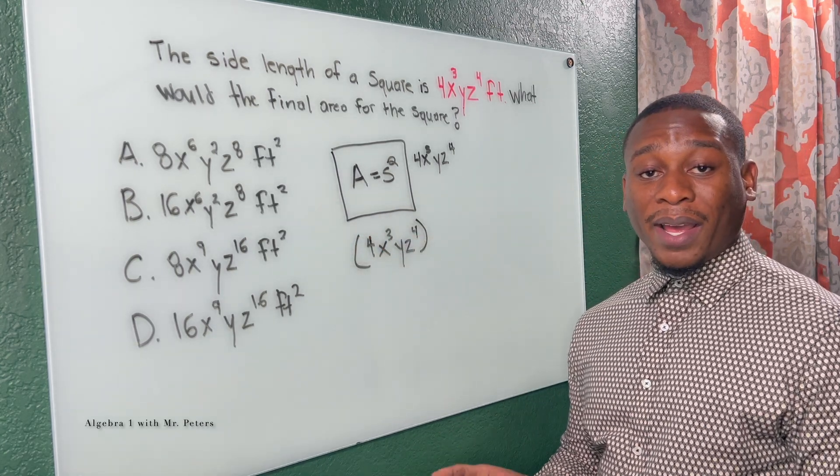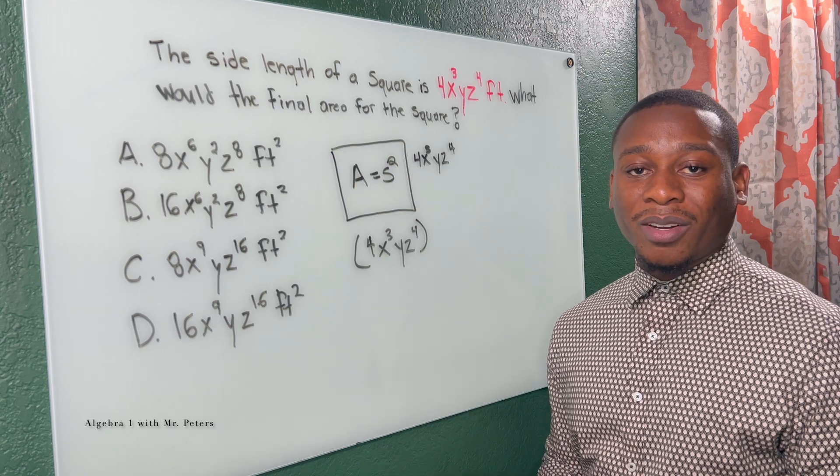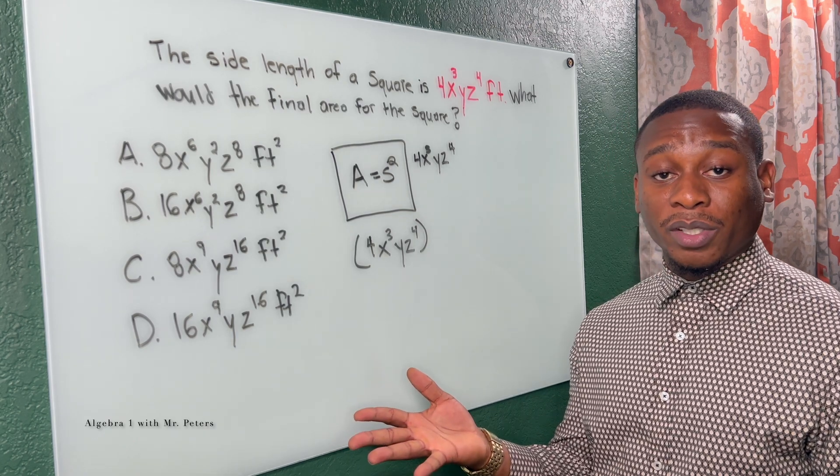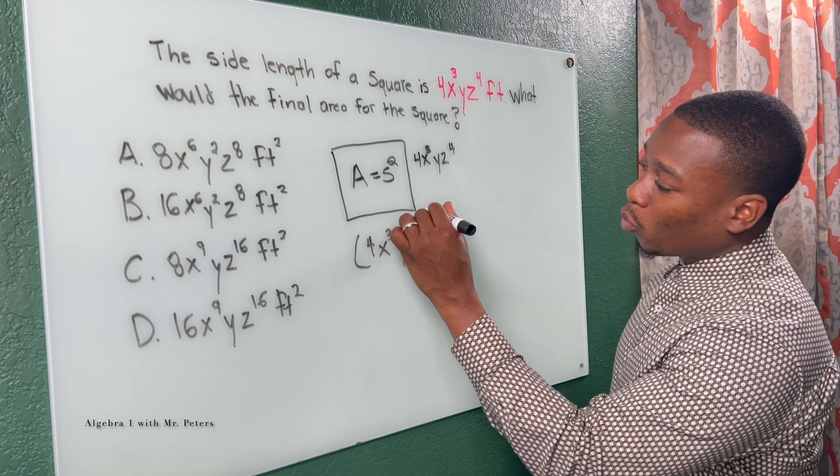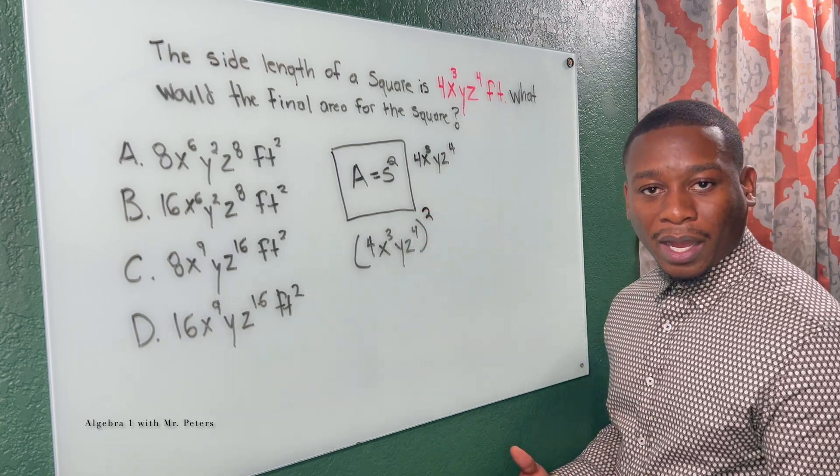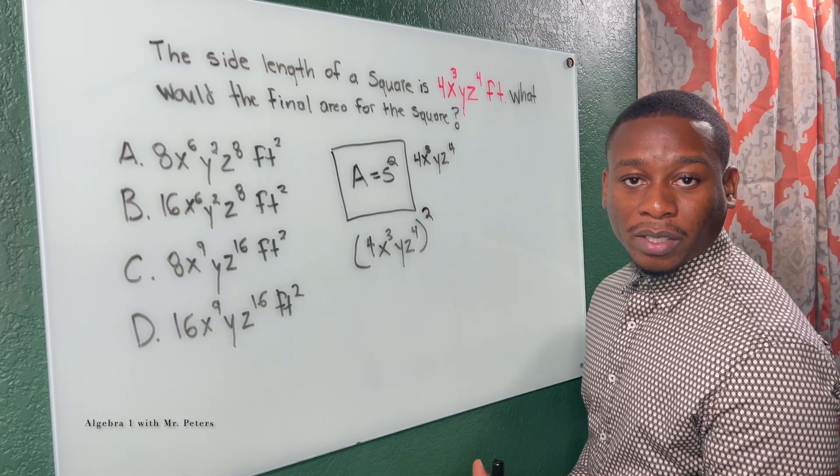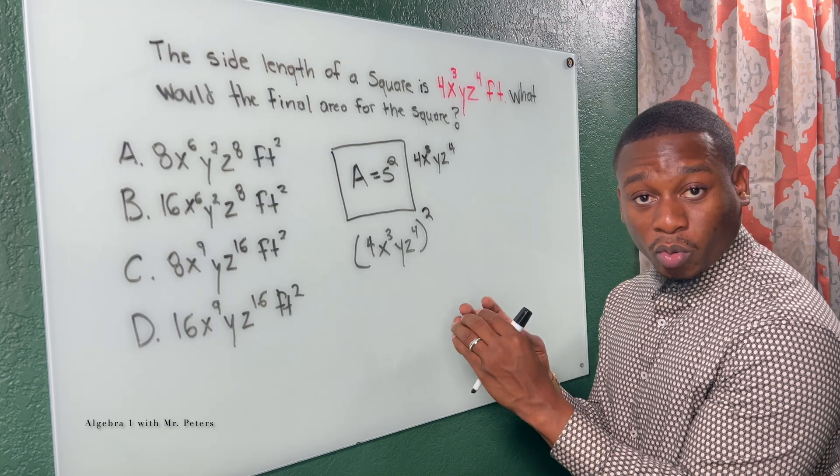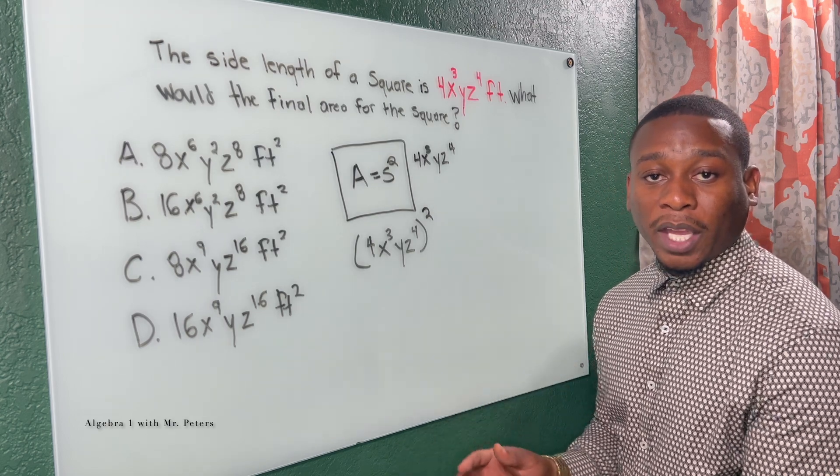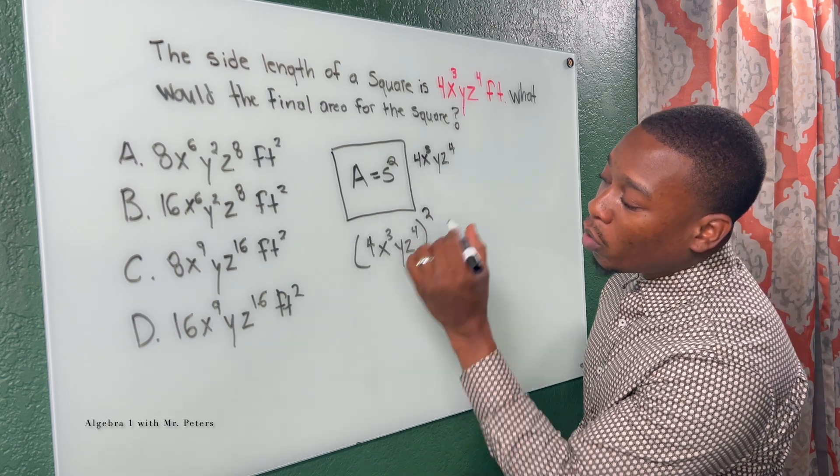Now, family, the reason why you or any students will get this wrong is because you forget properties of exponents, right? So let's say we square this and we just forgot. So we multiplied everything. We mixed our exponent rules with our regular multiplication rules. So what do I mean? We multiply everything.